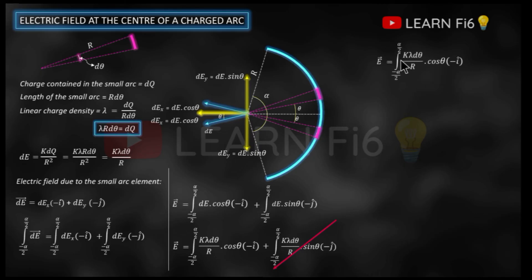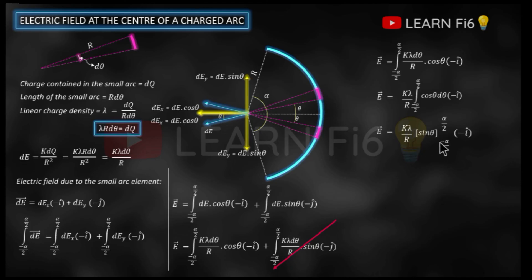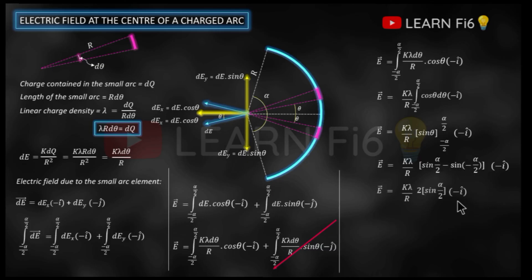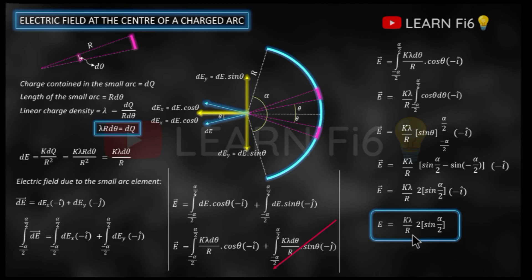We are left with only the horizontal component. Taking the constant k lambda by R outside the integral, we integrate cos theta d theta from minus alpha by 2 to plus alpha by 2. The integration of cos theta is sine theta. Substituting the limits, the two minus signs become plus and we can add them together, giving 2 times sin(alpha/2). So the magnitude of the electric field is E = 2k lambda sin(alpha/2) divided by R. The negative sign in the vector form indicates the direction is along the negative x-axis.